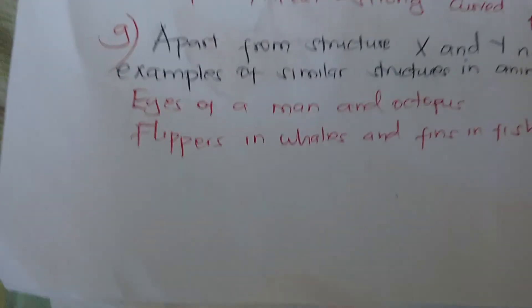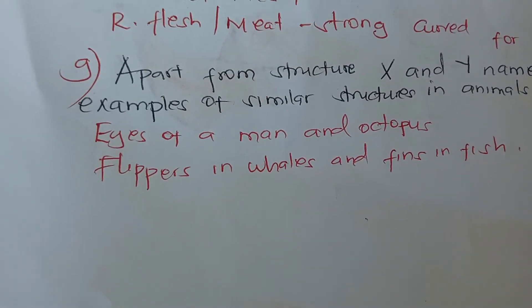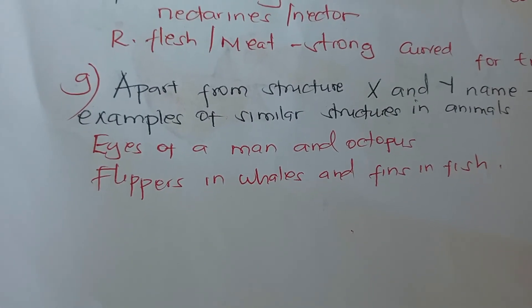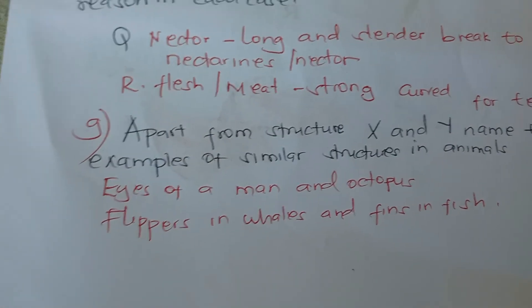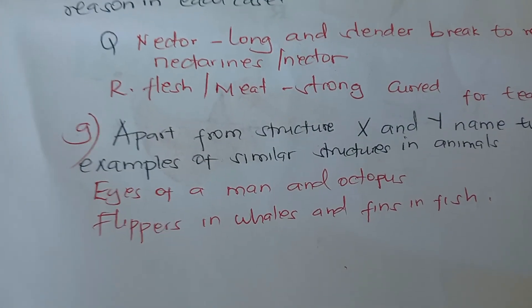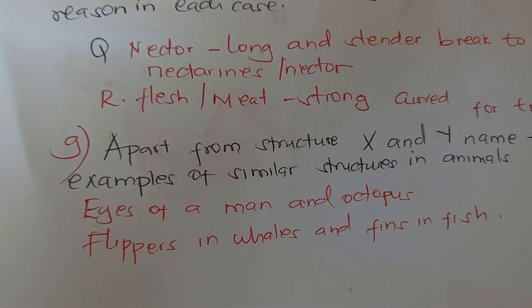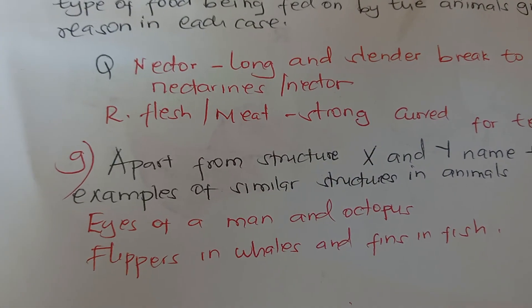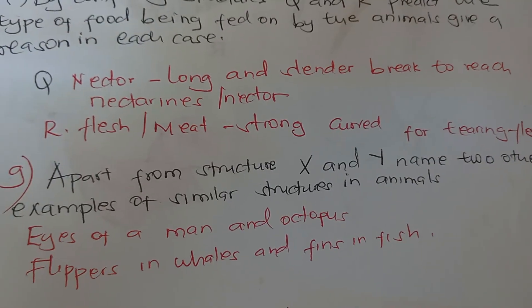Other examples of analogous structures include the eyes of a man and an octopus, and flippers in whales and fish. Thank you guys for watching — don't forget to hit the subscribe button and visit Pinky Science Academy for these and more videos.